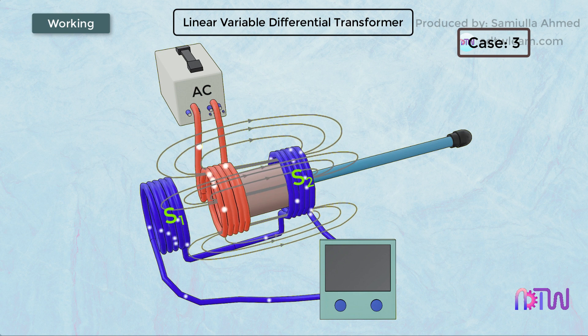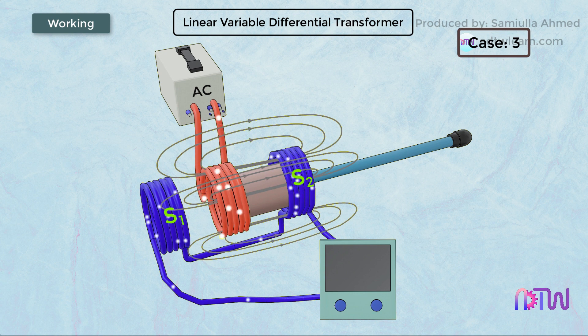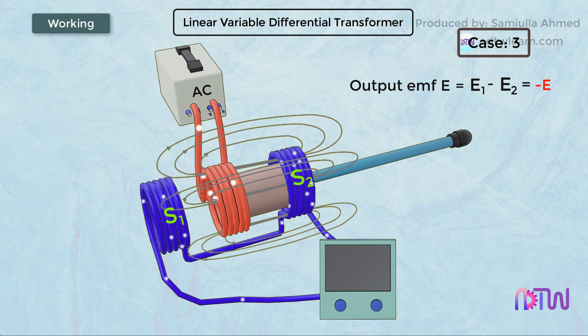Therefore, greater EMF is generated in coil S2. Thus EMF in coil S2 (E2) will be greater than the EMF induced in coil S1 (E1), and hence the net output voltage will be negative.